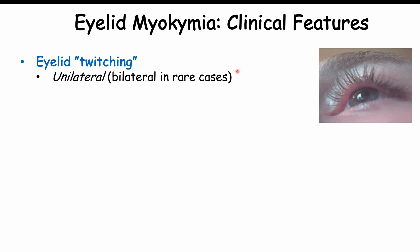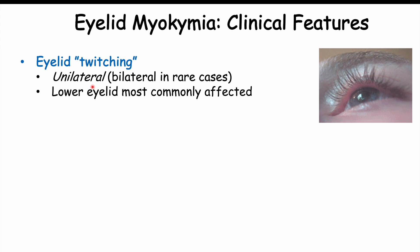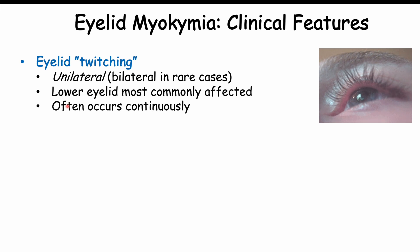The clinical features of this condition involve eyelid twitching, which occurs unilaterally — on one side. Bilateral cases can occur, although they are rare. The lower eyelid is most commonly affected more than the upper eyelid, but either can be affected, and twitching often occurs continuously and periodically.